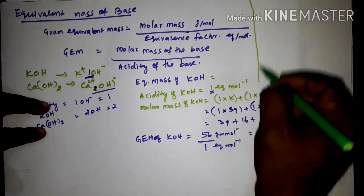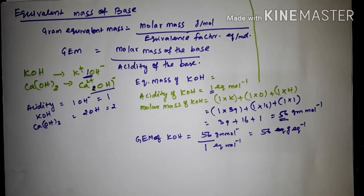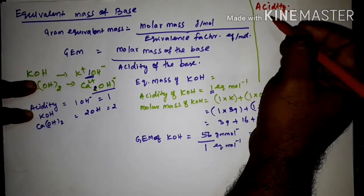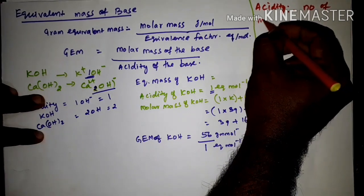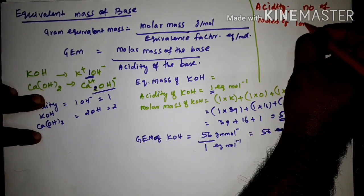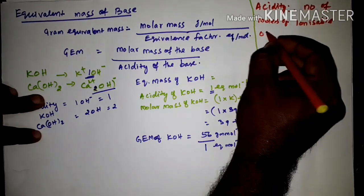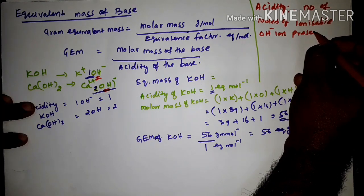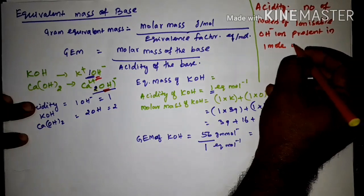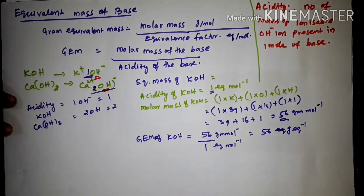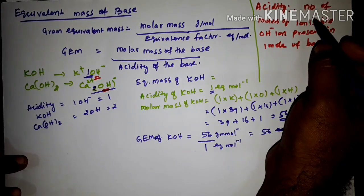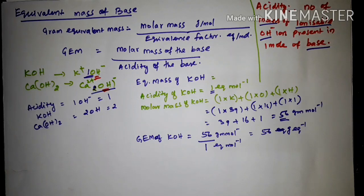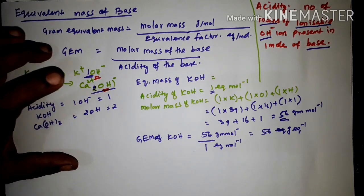Acidity is defined as the number of moles of ionizable OH− ions present in one mole of the base. So you can calculate the equivalent mass of a base in the same way — it is very simple.